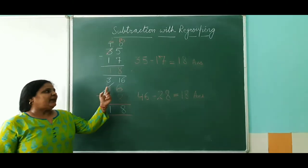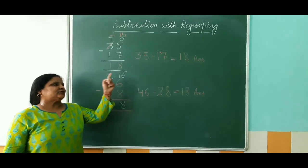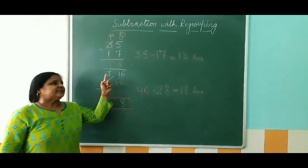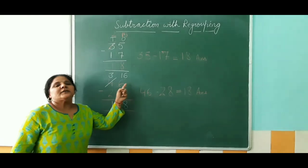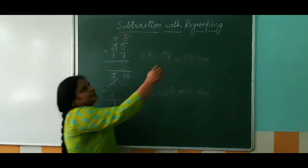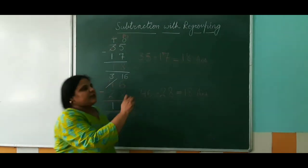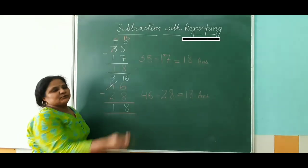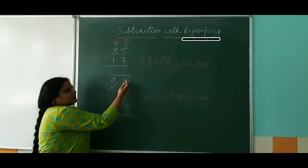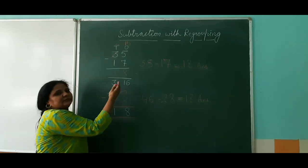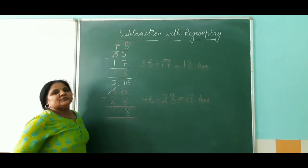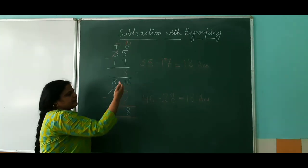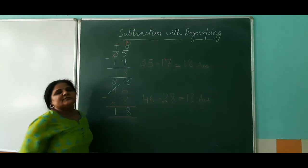This borrowing is called nothing but regrouping. We have regrouped the ones again for the subtraction, so that we can give 8 out of 16.